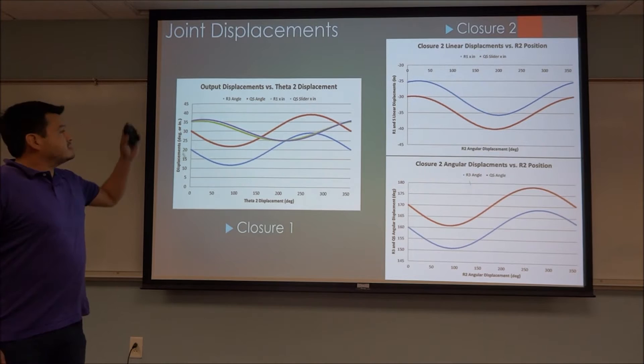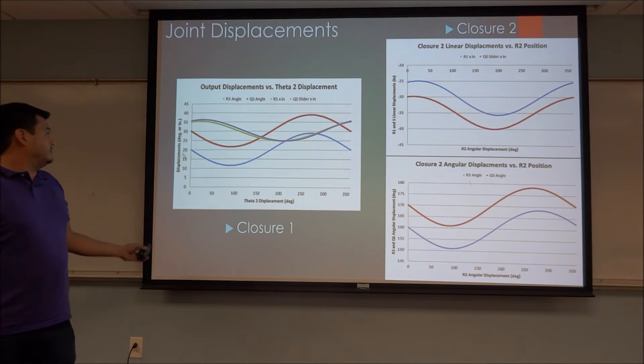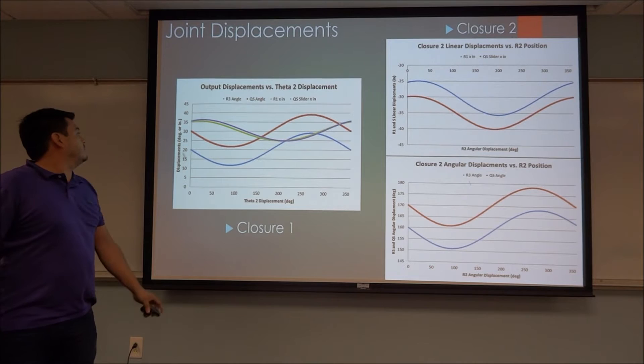This shows the graphs of the displacements of the joints. We have here closure one with all the joints together. As we can see, they all vary between 10 and 35 degrees or inches depending on the variable.